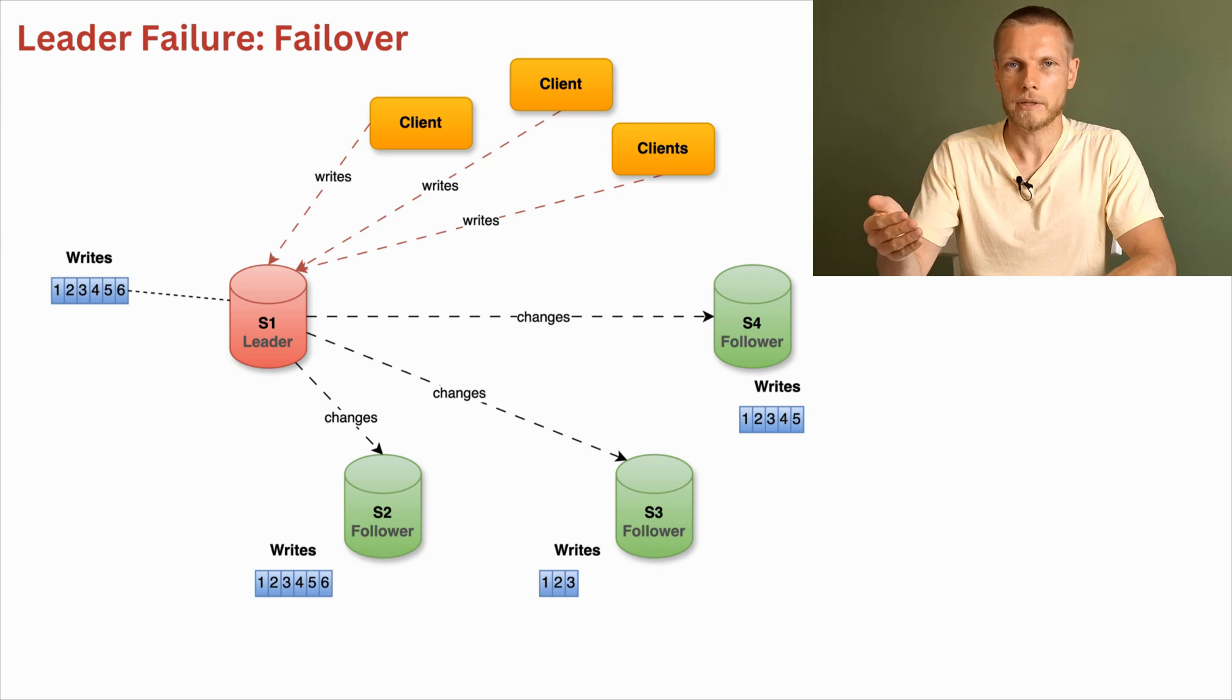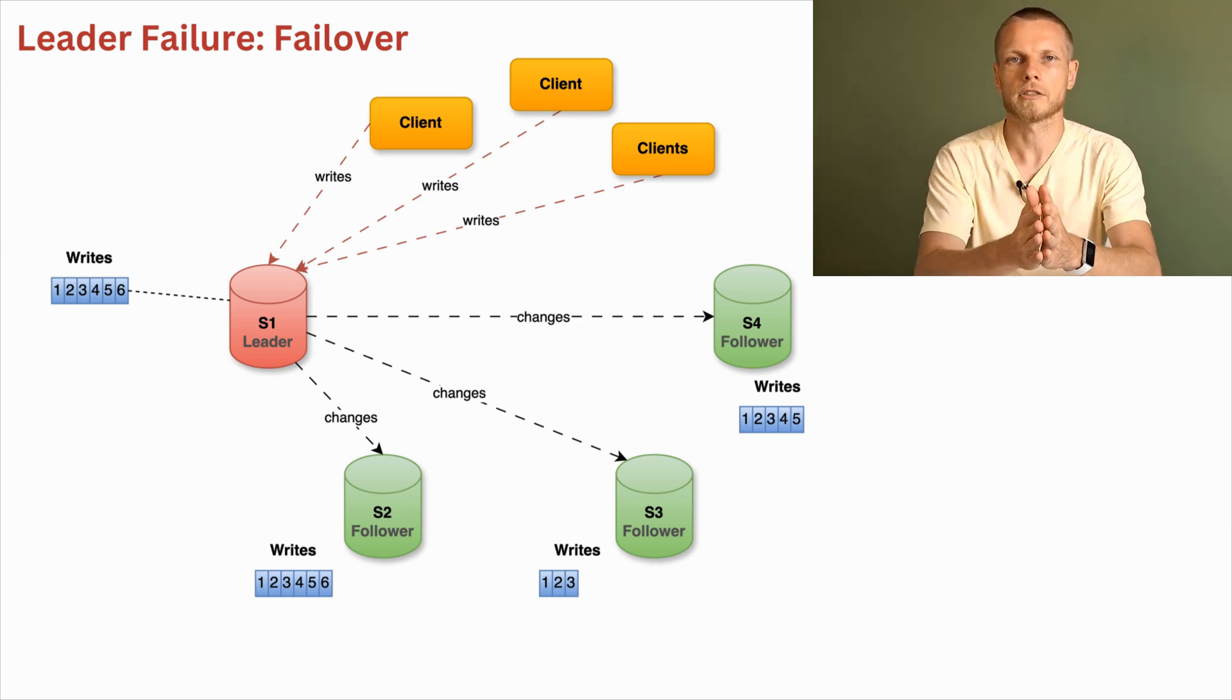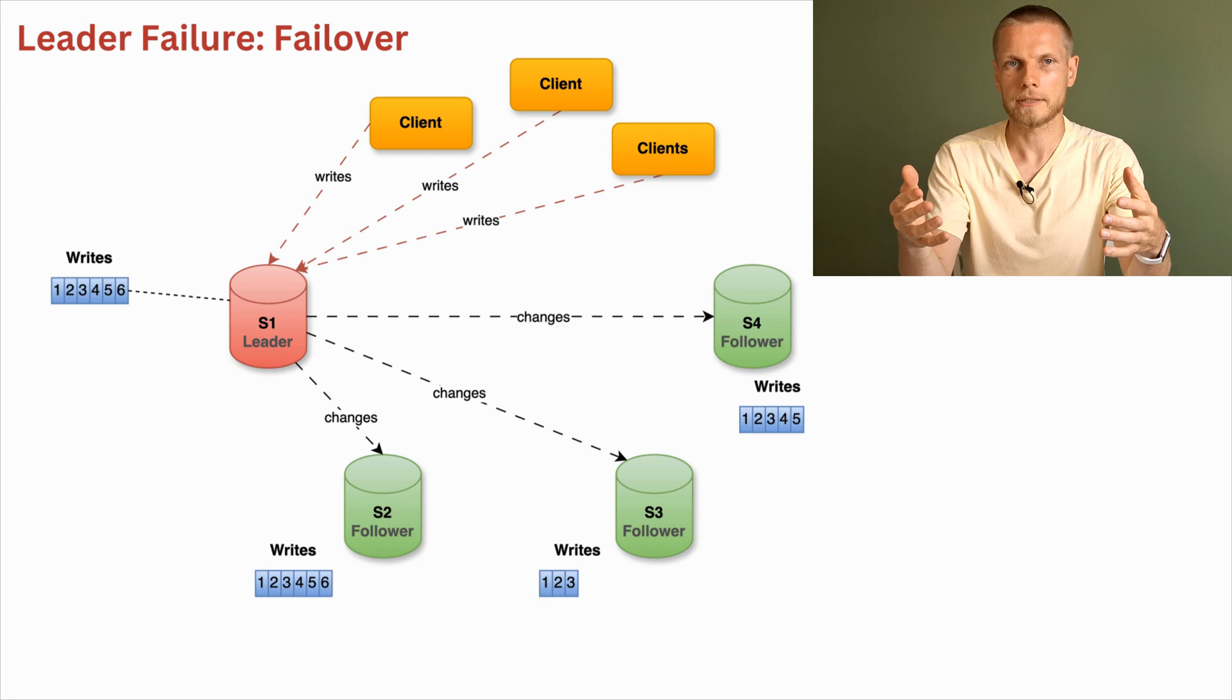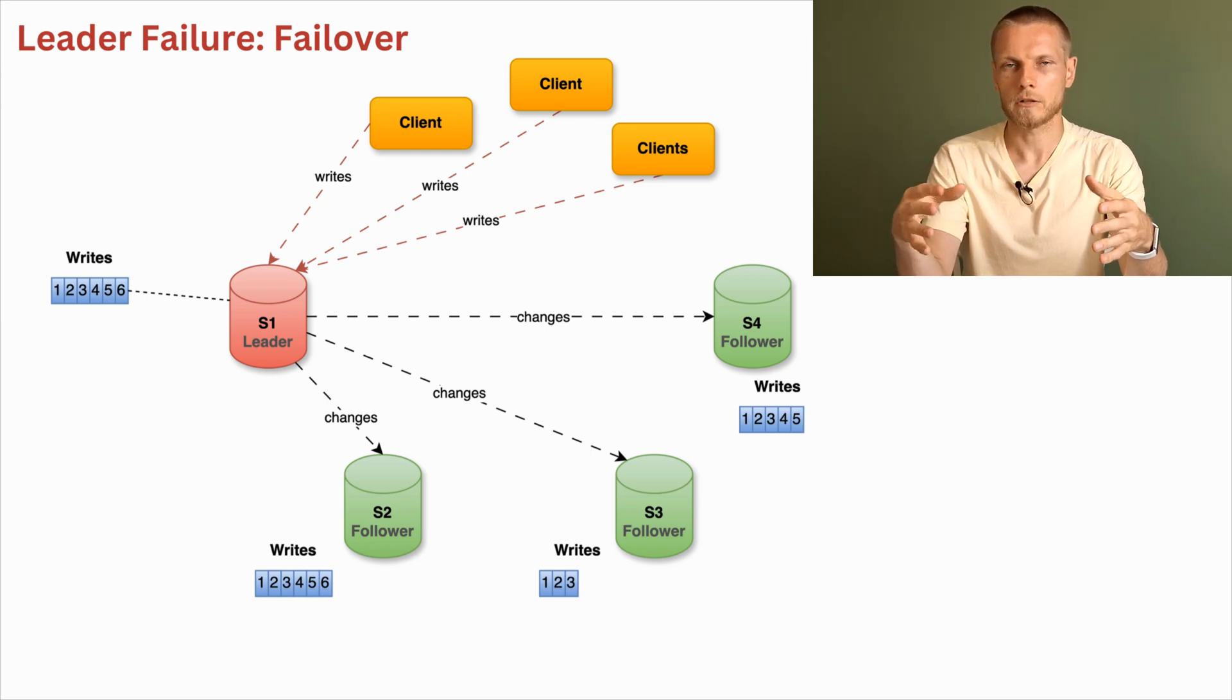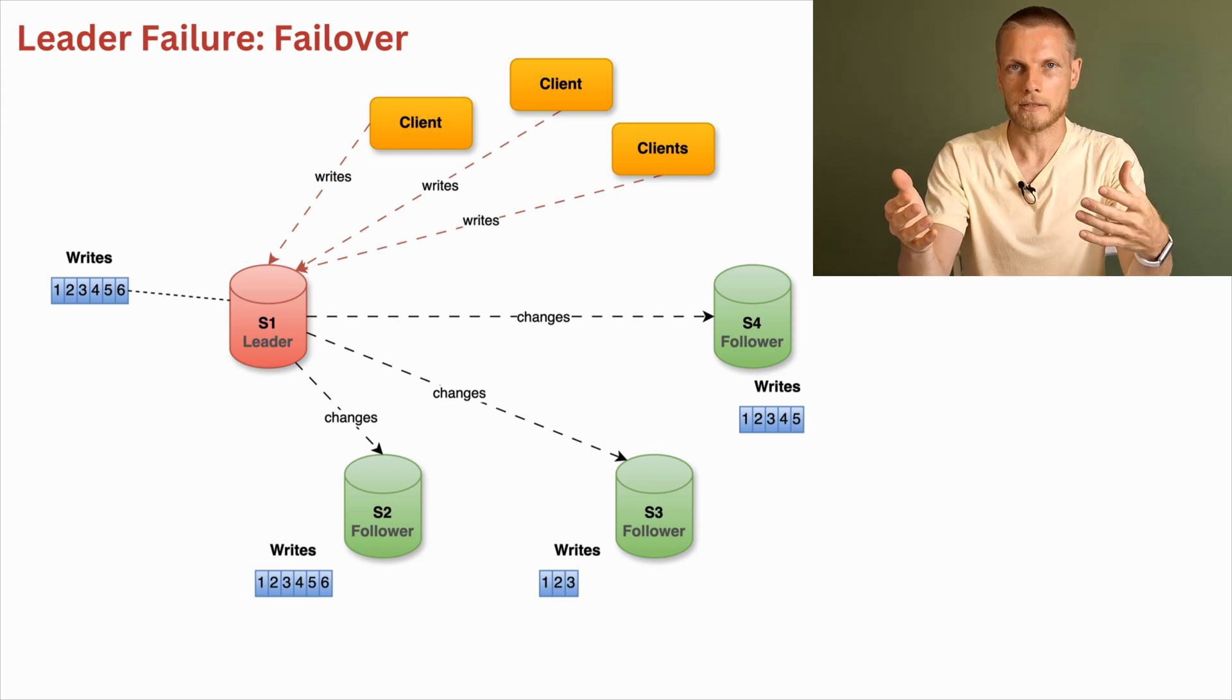In this example, the replication is asynchronous and because of the asynchronous process, the followers slightly lag behind. On the picture, leader has six writes, follower S2 has all six writes, follower S3 has only three writes, and follower S4 has five writes. Then leader fails.